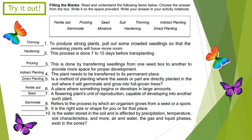Number 9: The correct answer is soot. Number 10: This is the water stored in the soil and is affected by precipitation, temperature, soil characteristics, and more. Air and water, the gas and liquid phases, exist in the pores. The correct answer is moisture. I hope you got it all right.